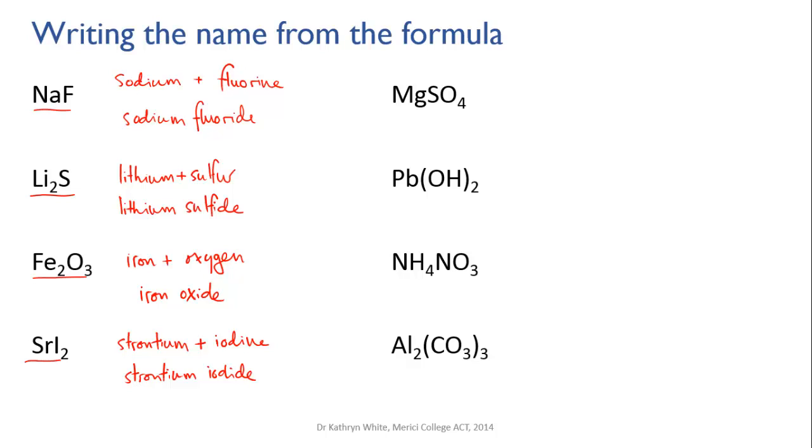These next ones are made from metal cations but polyatomic anions and really all you need to be able to do here is recognize the polyatomic anions. In this first case we've got magnesium is the metal ion so it retains its name and you should be able to recognize now that SO4 is the sulfate anion. So the name of this compound is magnesium sulfate. This next one, Pb is lead and the OH here is the hydroxide anion. The fact that it's been put in brackets with a little two means that you have two hydroxides, two separate hydroxide anions for every one lead cation.